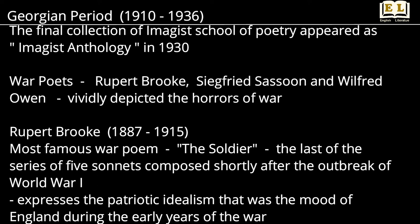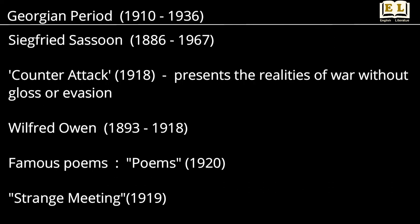Most of the Georgian poets had gone through the bitter experiences of the First World War. War poets such as Rupert Brooke, Siegfried Sassoon, and Wilfred Owen vividly depicted the horrors of war. Rupert Brooke's most famous war poem is The Soldier, the last of a series of five sonnets composed shortly after the outbreak of World War I. The sonnet expresses the patriotic idealism that was the mood of England during the early years of the war. Siegfried Sassoon's poem Counter-Attack presents the realities of war without gloss or evasion. Wilfred Owen's famous poems include Poems and Strange Meeting.